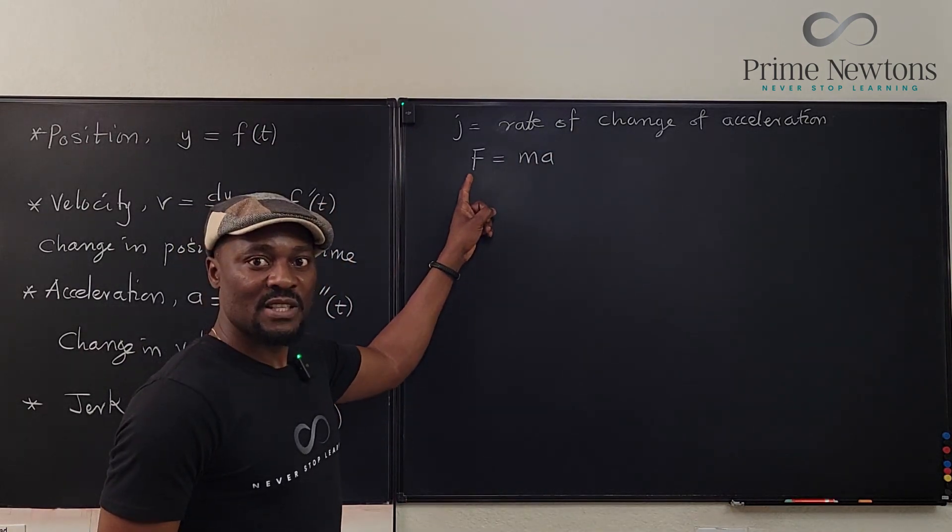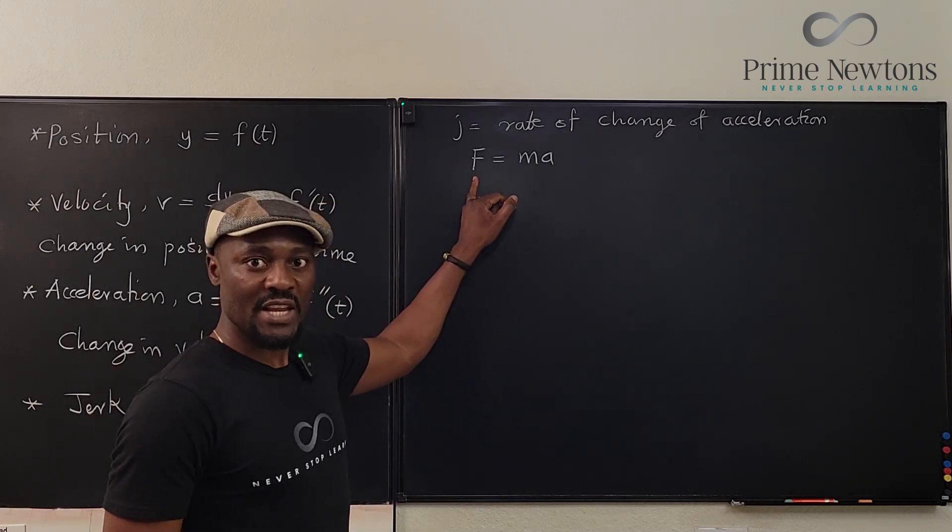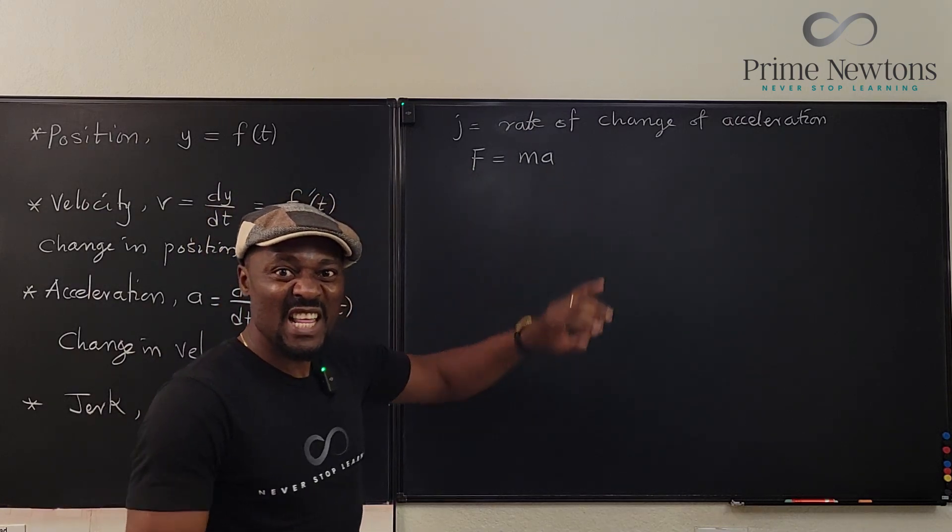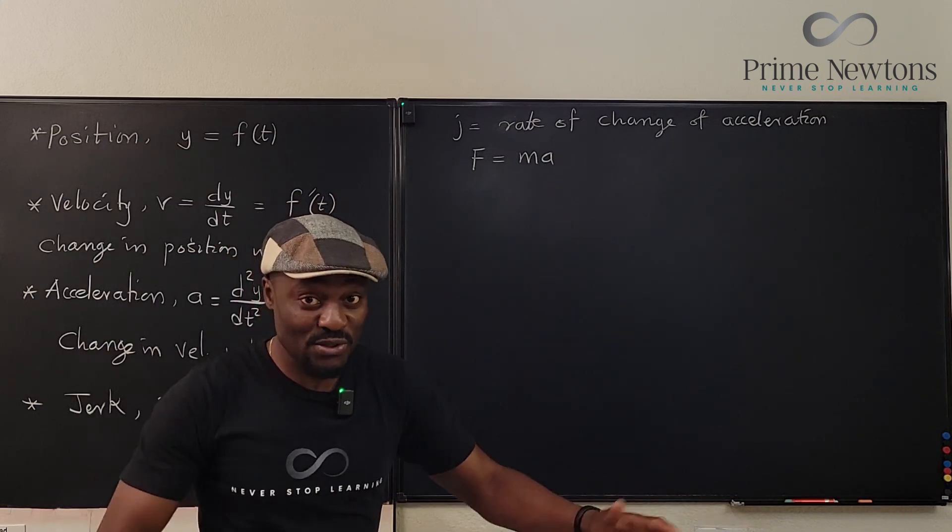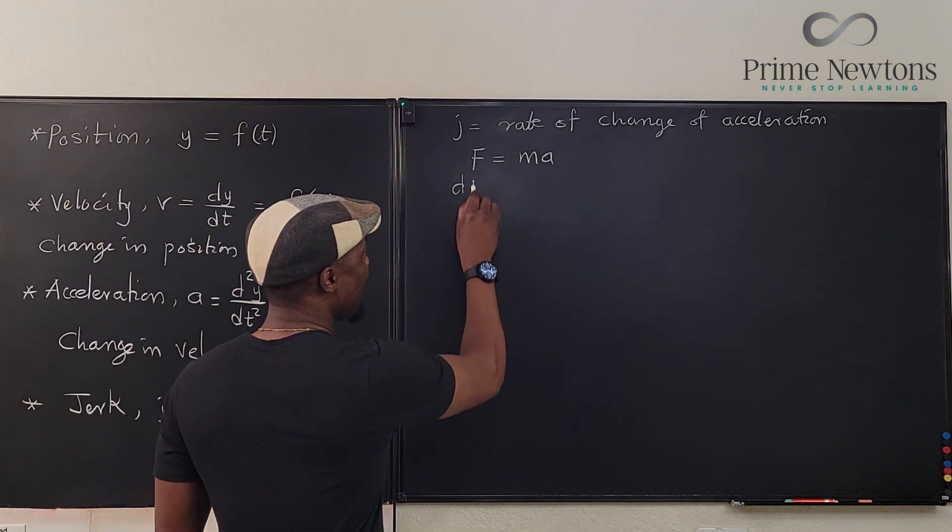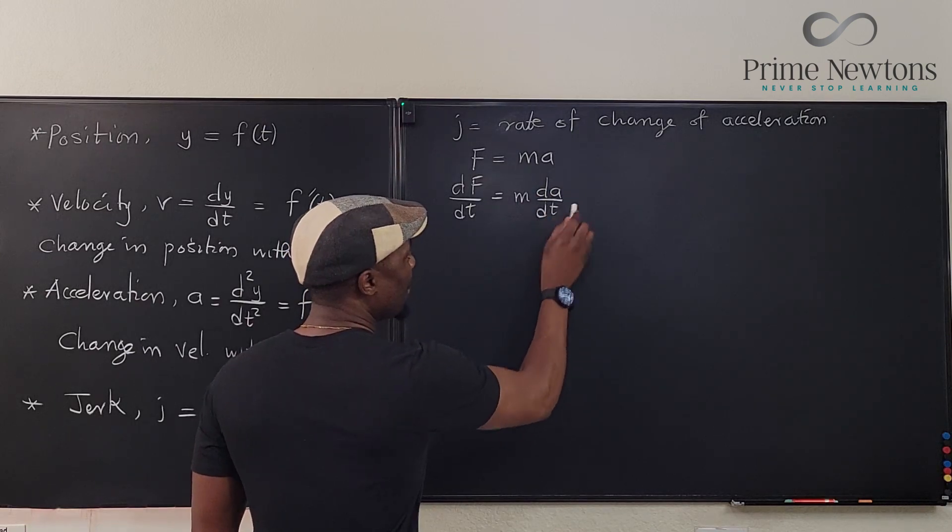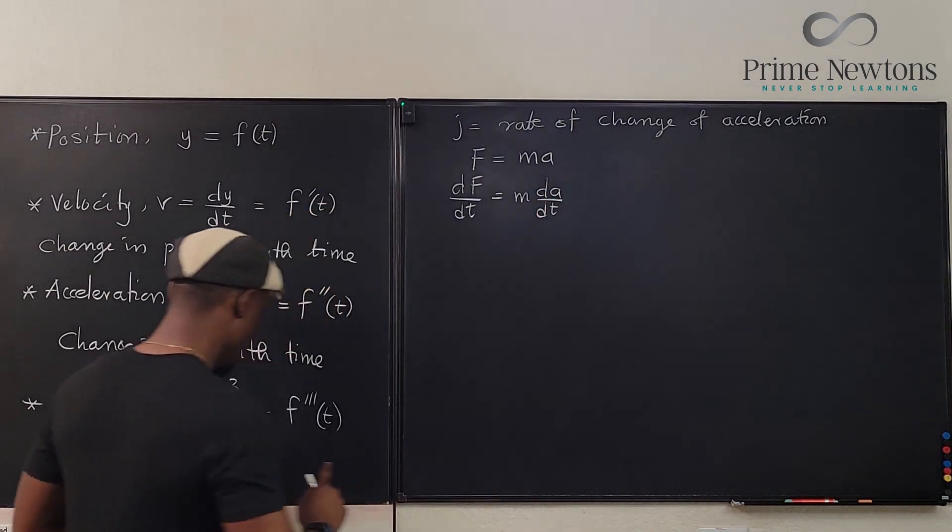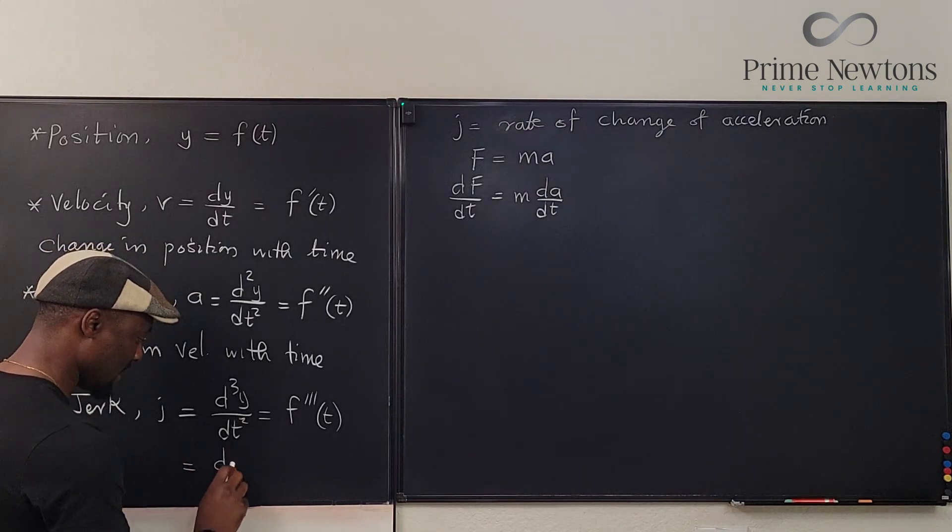Now, if you want to know the rate at which this is changing, if you differentiate both sides, force can change, acceleration can change in the course of motion, but the mass of the object does not change in the course of motion. So, what happens is, if you differentiate this, dF/dt is going to be m times dA/dt. As you can see, dA/dt is what we have here.